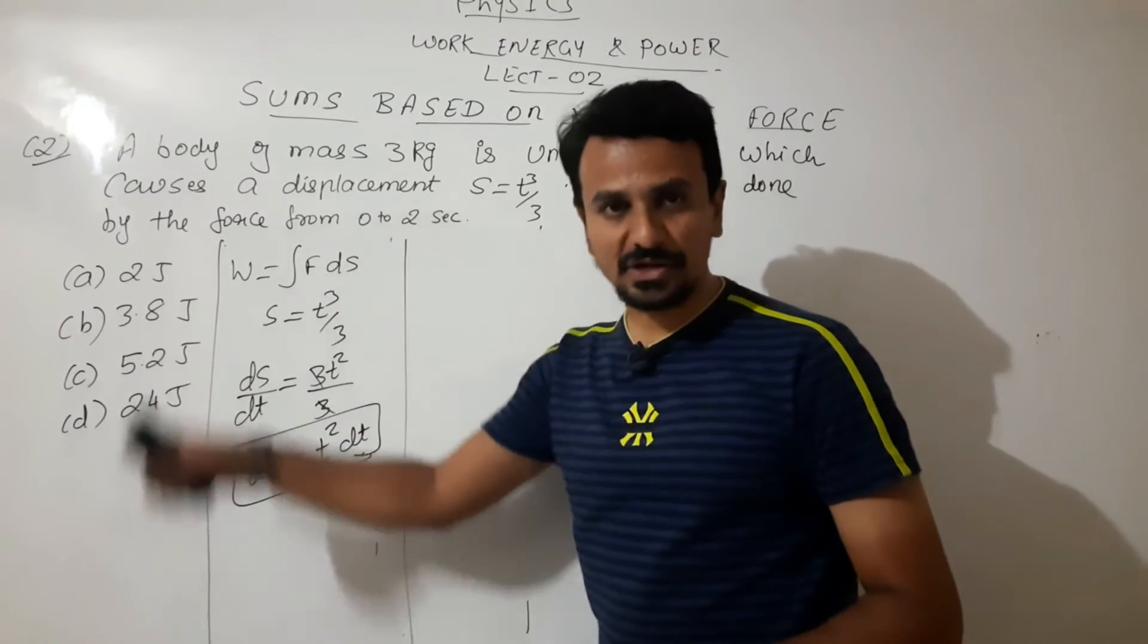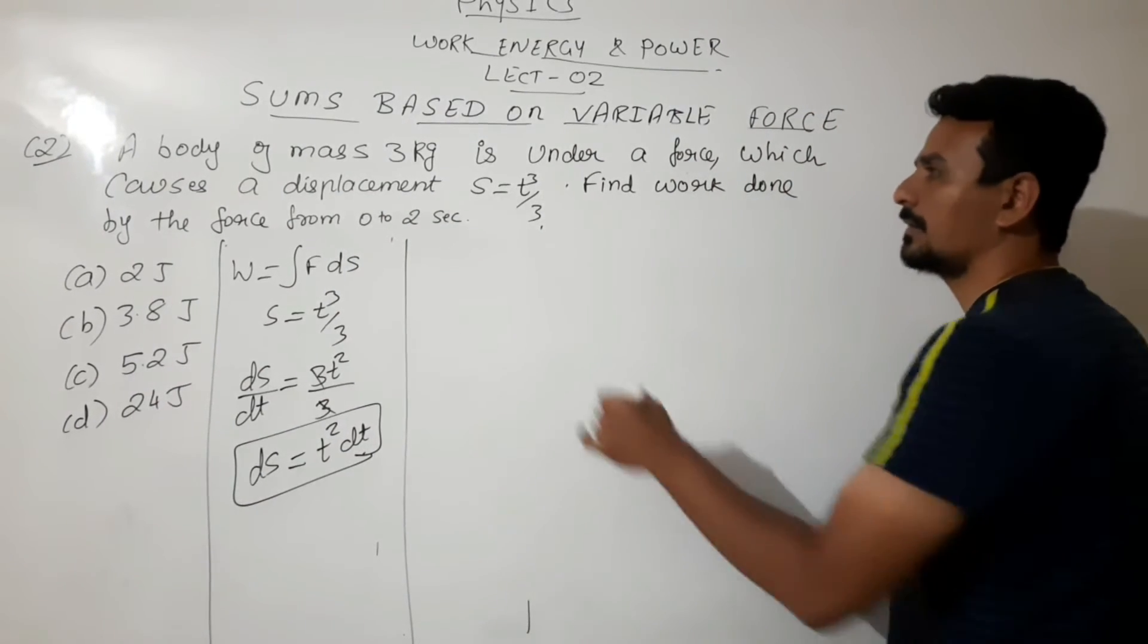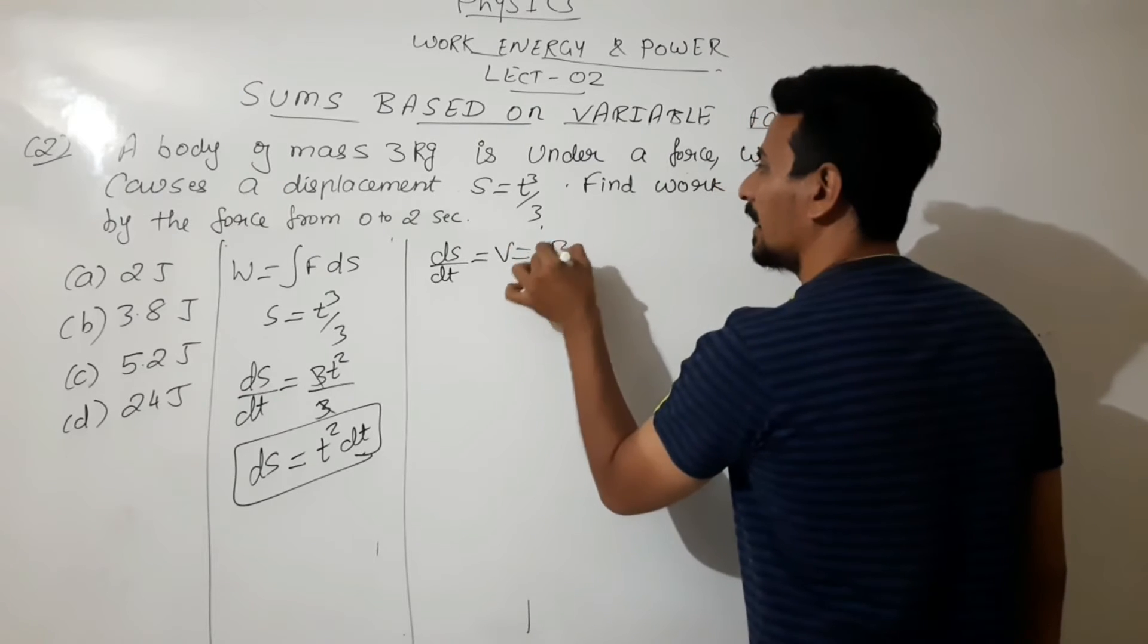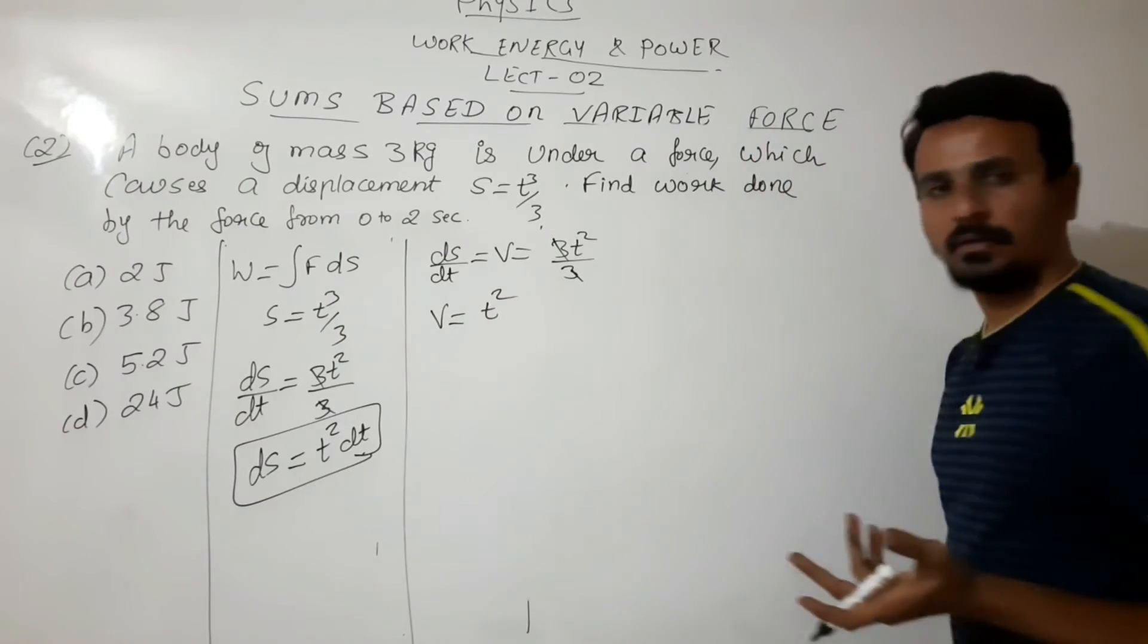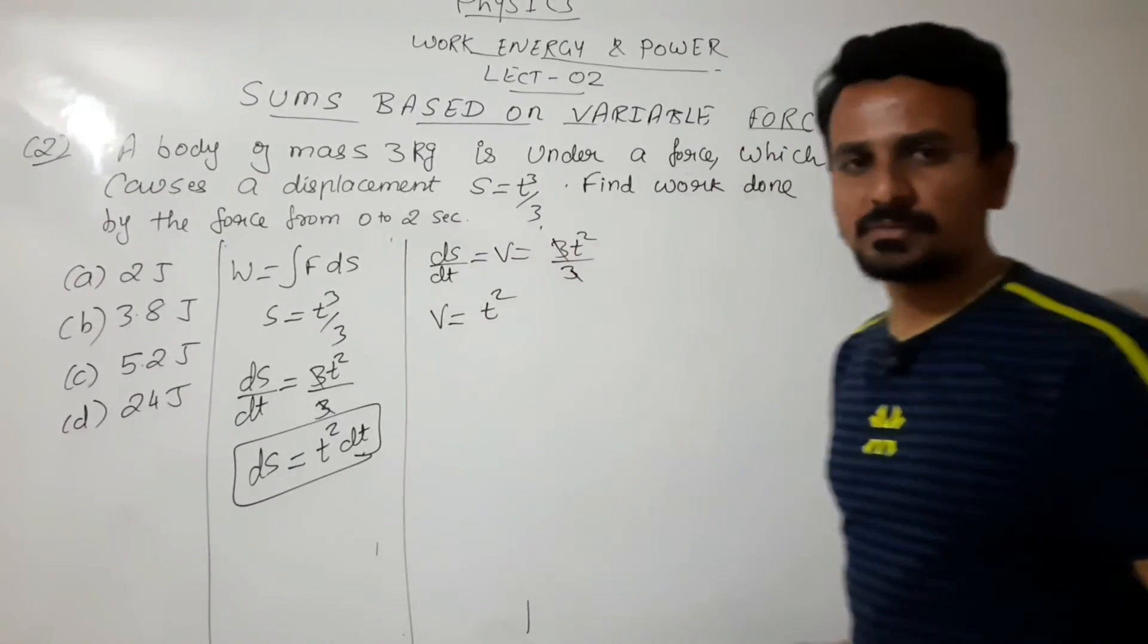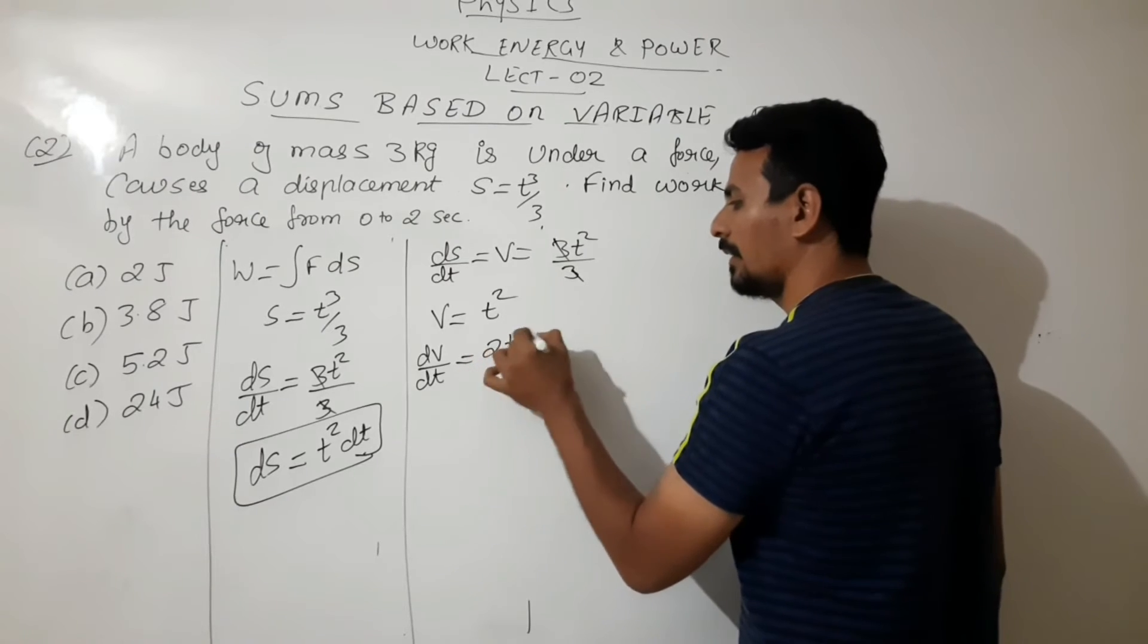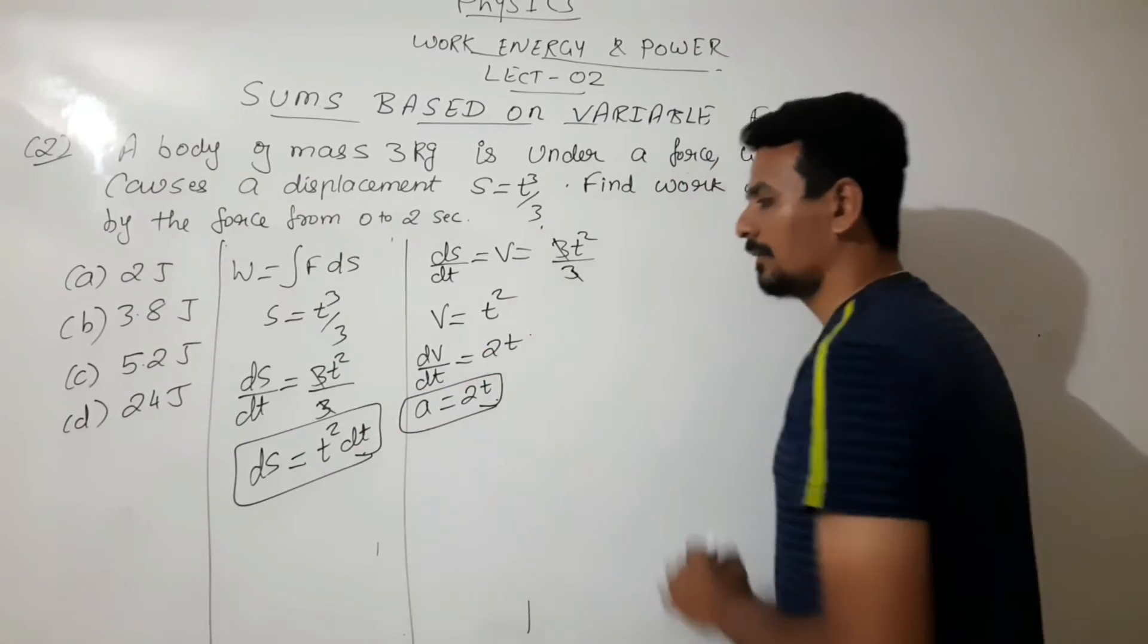Now we will find force. Already mass is given in the question. We will calculate acceleration. How to calculate acceleration? Differentiate this two times. ds/dt which will give you velocity is 3t²/3, so velocity comes out to be t². We need to calculate acceleration. Further differentiate this: dv/dt = 2t. So now acceleration is 2t.